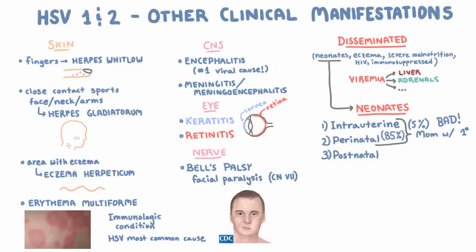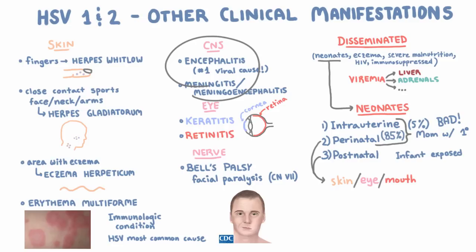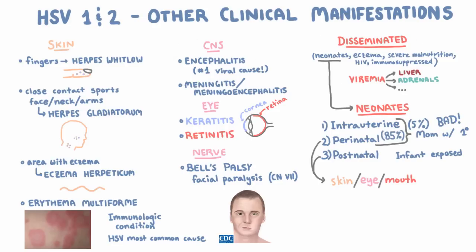Postnatal infection occurs when the infant is exposed after birth. As far as symptoms of perinatal or postnatal transmission, the infant usually gets skin, eye, and mouth lesions. Much less frequently, they can actually get encephalitis or disseminated disease, and that can be fatal, or at least cause severe complications like mental retardation if the baby survives, even if antiviral treatment is given.